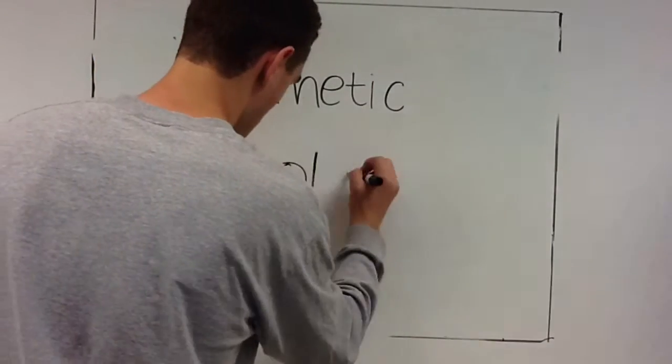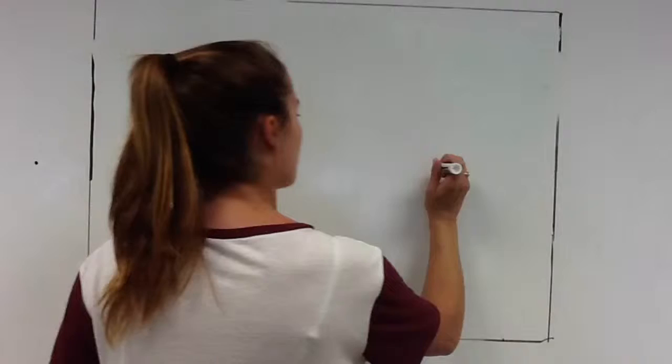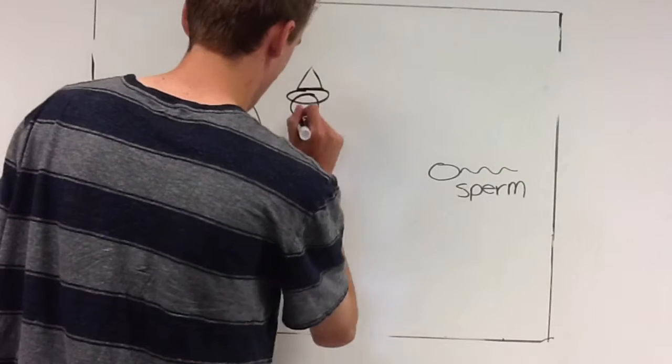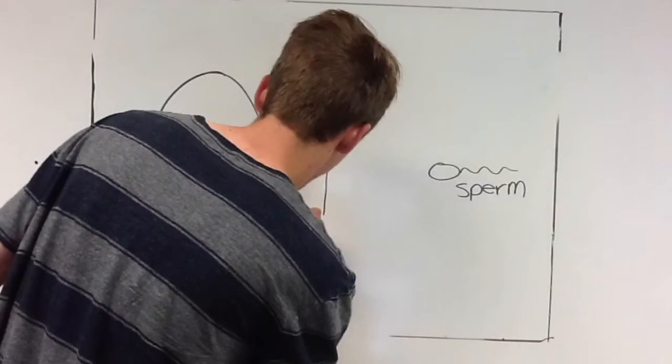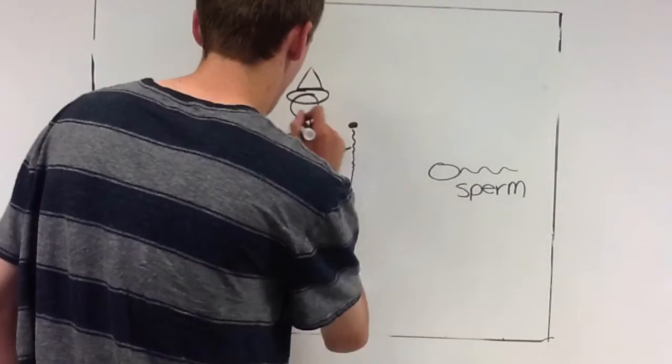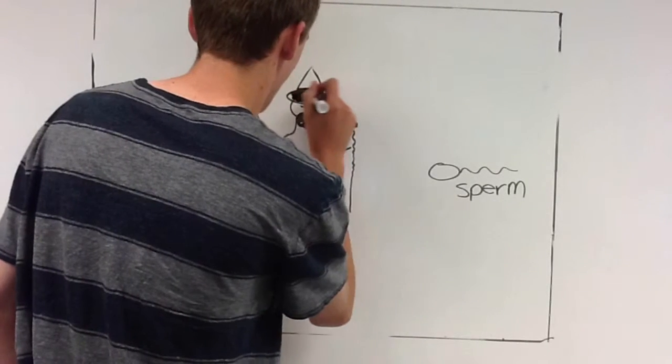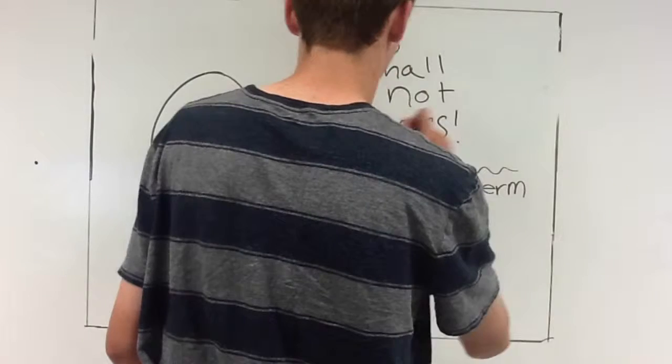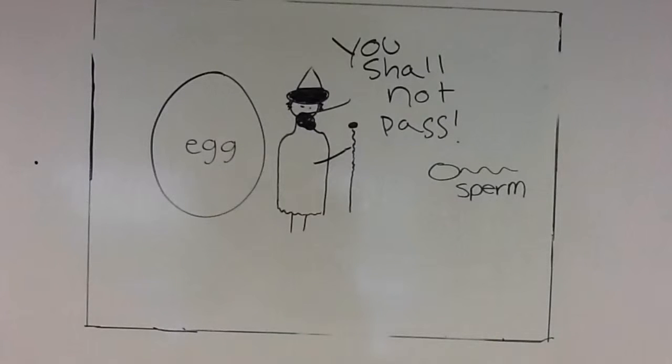Gametic isolation is when gametes of different species meet but do not fuse to form a zygote. Sometimes the egg and sperm just aren't right for each other. The sperm becomes unable to fertilize the egg either because it is weak and unable to penetrate the egg receptor or because it cannot survive in the female reproductive tract. Either way, the sperm shall not pass and the organisms shall not reproduce. Gametic isolation is the last of the prezygotic barriers. Now we move forward onto postzygotic barriers.